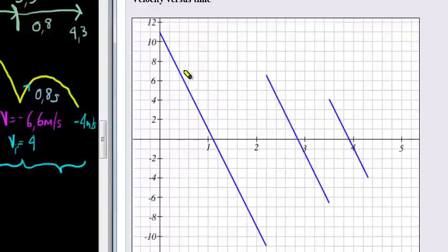What you'll always notice is that these lines are parallel to one another. They lie parallel because they have the same gradient. The gradient is negative 10, negative 10, negative 10. That is the acceleration.